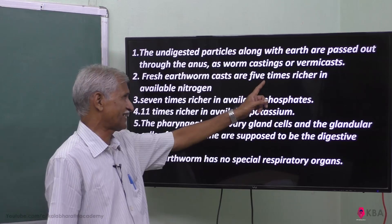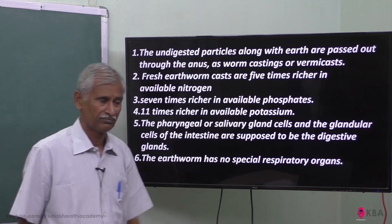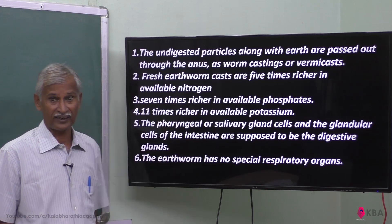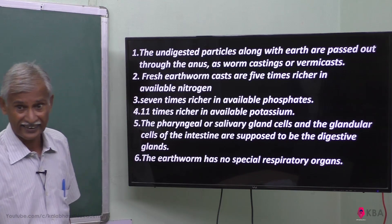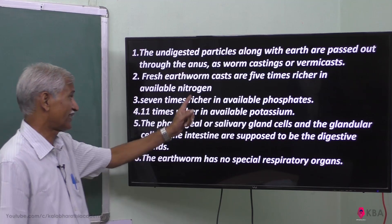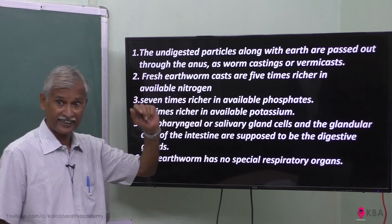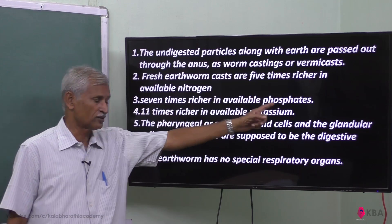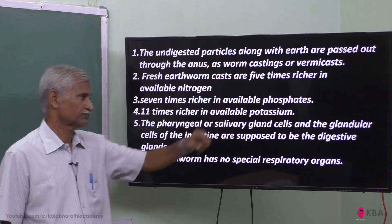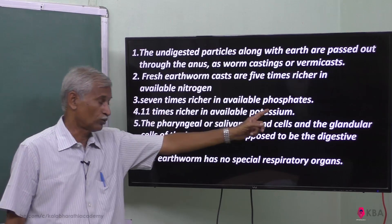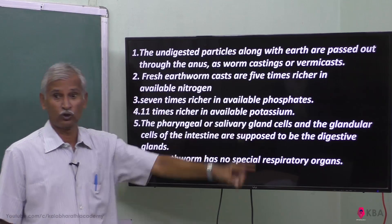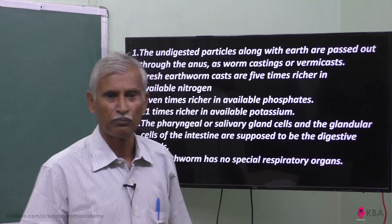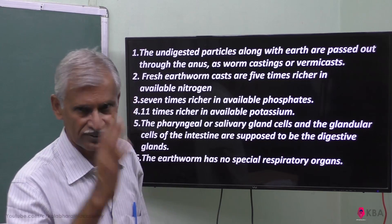Vermicast is 5 times richer in nitrogen, 7 times richer in phosphorus, and 11 times richer in potassium. So vermicastings are very good fertilizers.